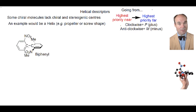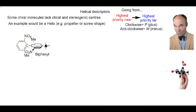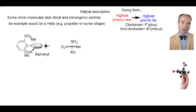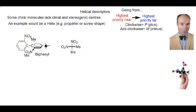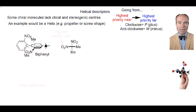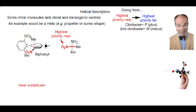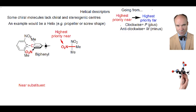This biphenyl offers an example. Let's look down the key carbon-carbon bond and depict what we see. We need to identify the higher priority substituent nearer to us — a choice between a nitro group or a methyl group. Nitrogen is higher priority than carbon, so the nitro group has the higher priority. Next, we determine the higher priority group far away, and again there's a choice between the nitro group or a methyl group, so the higher priority far away is nitro.